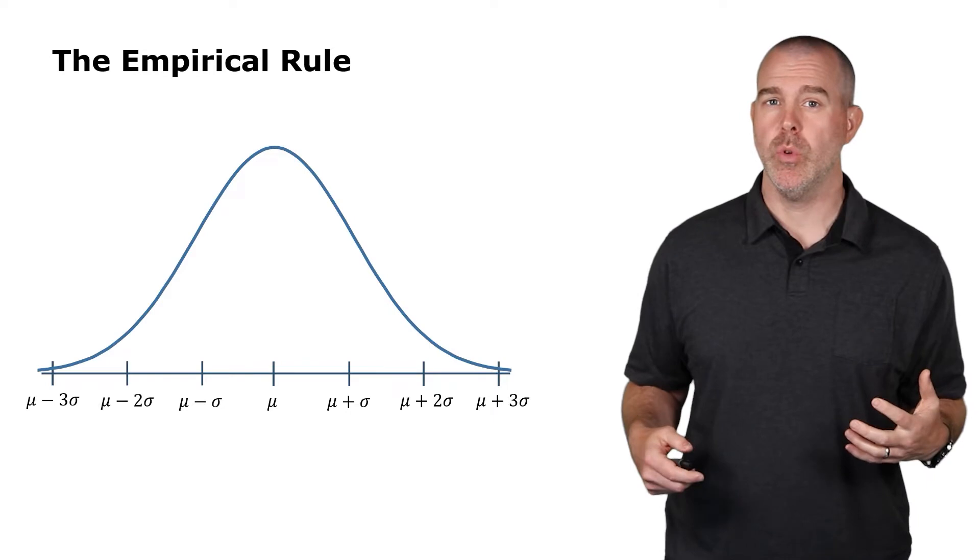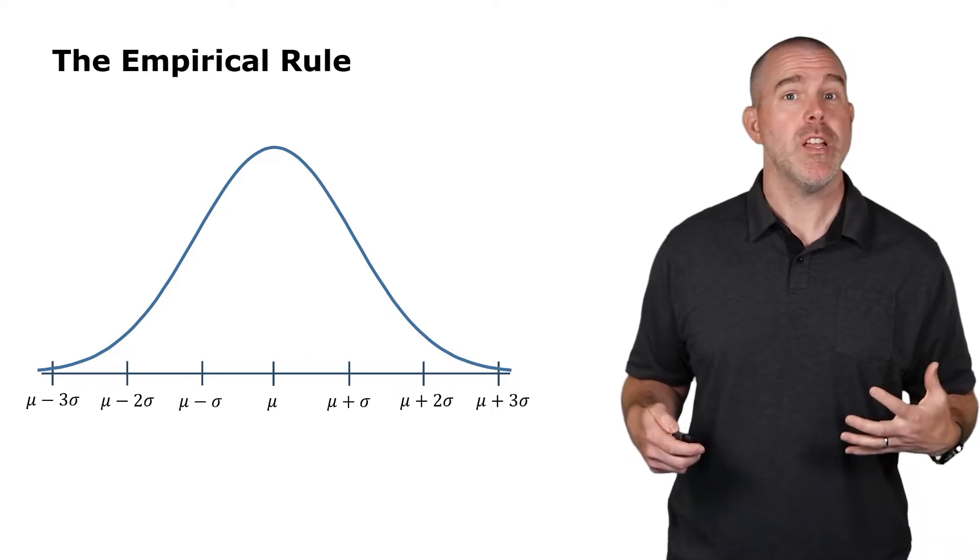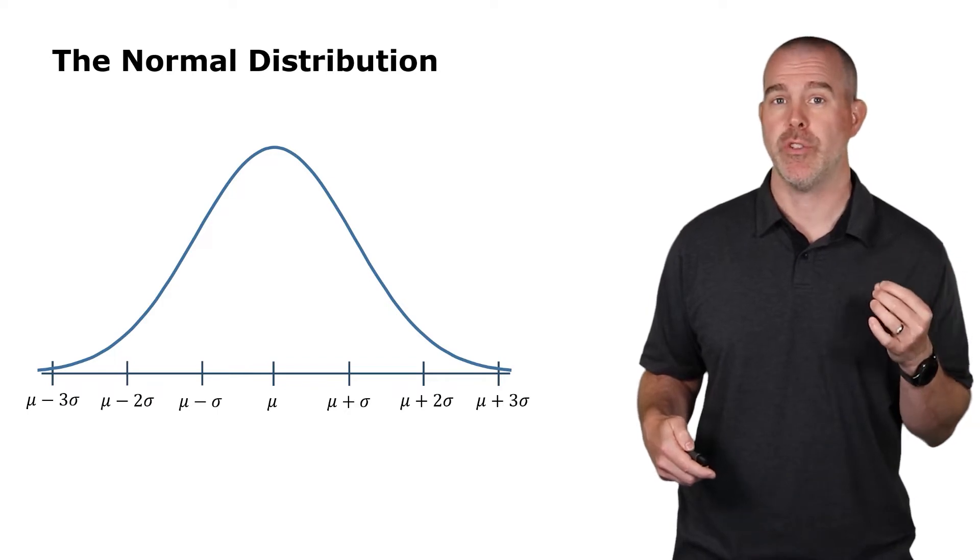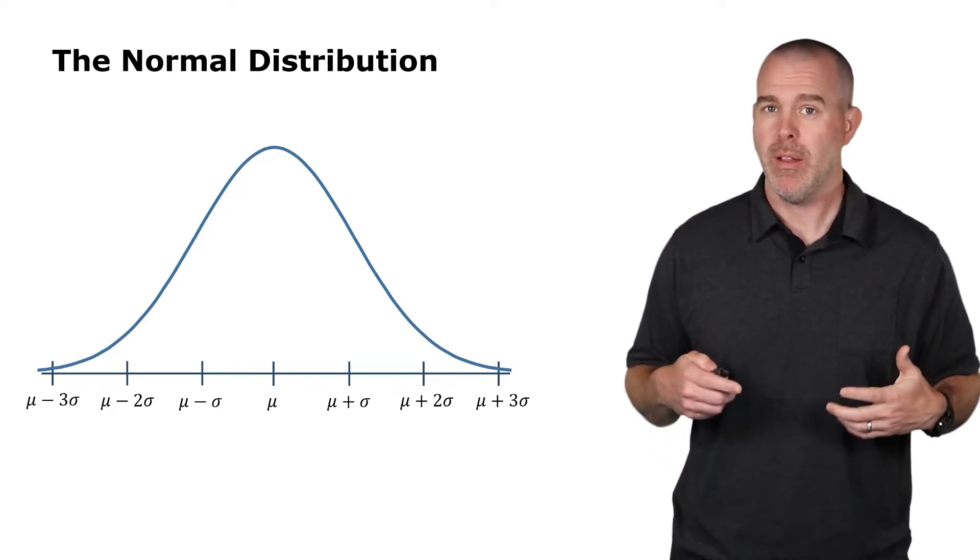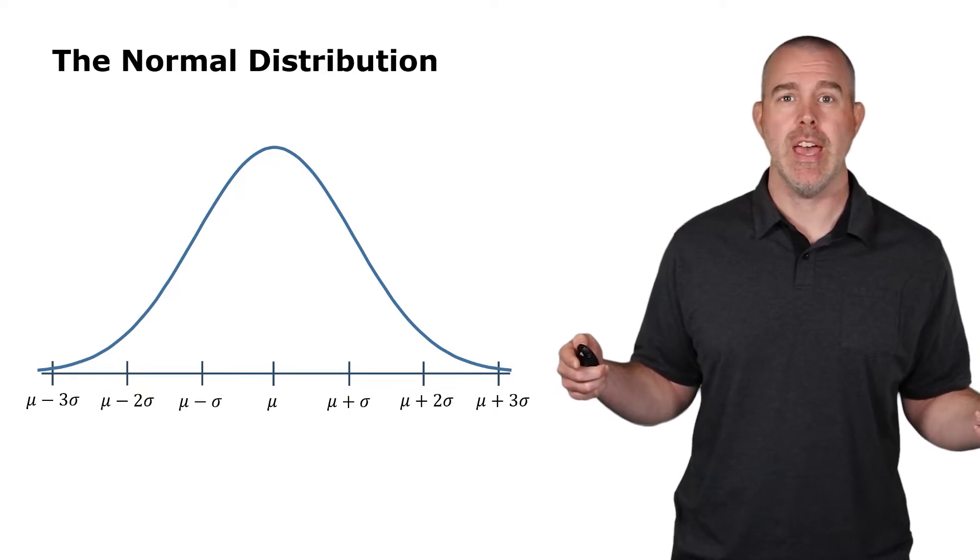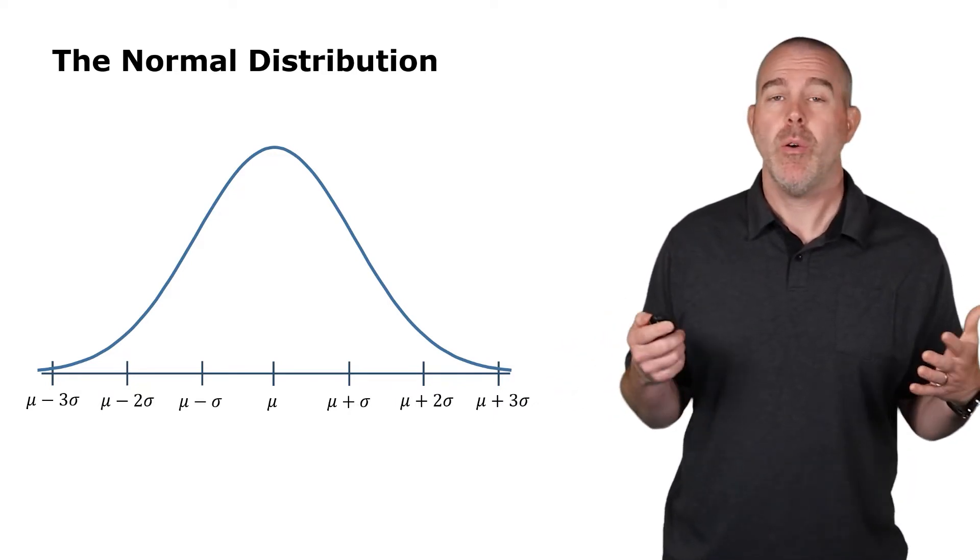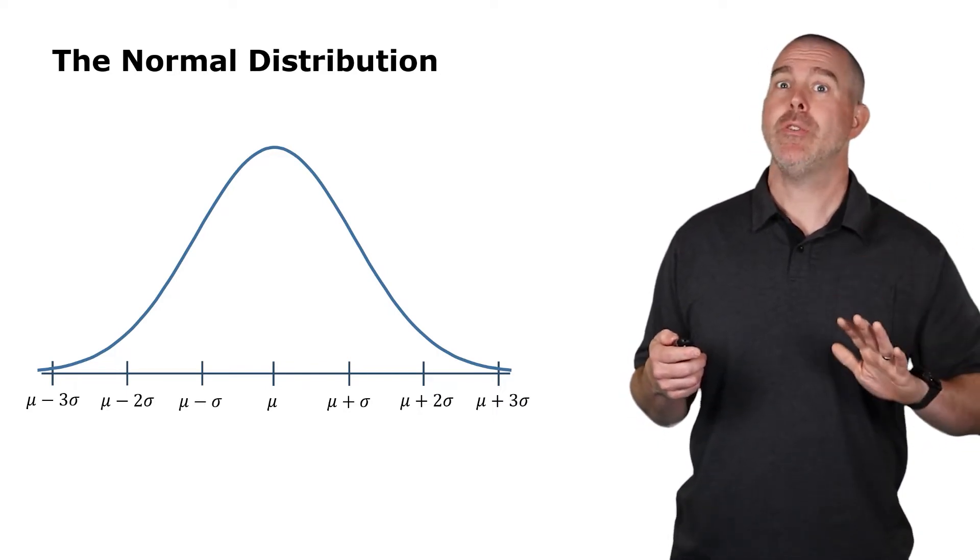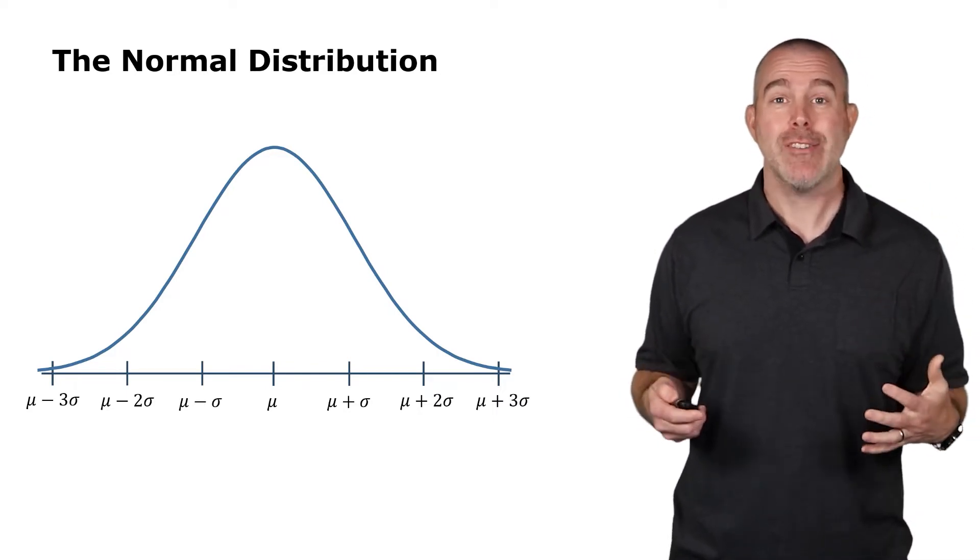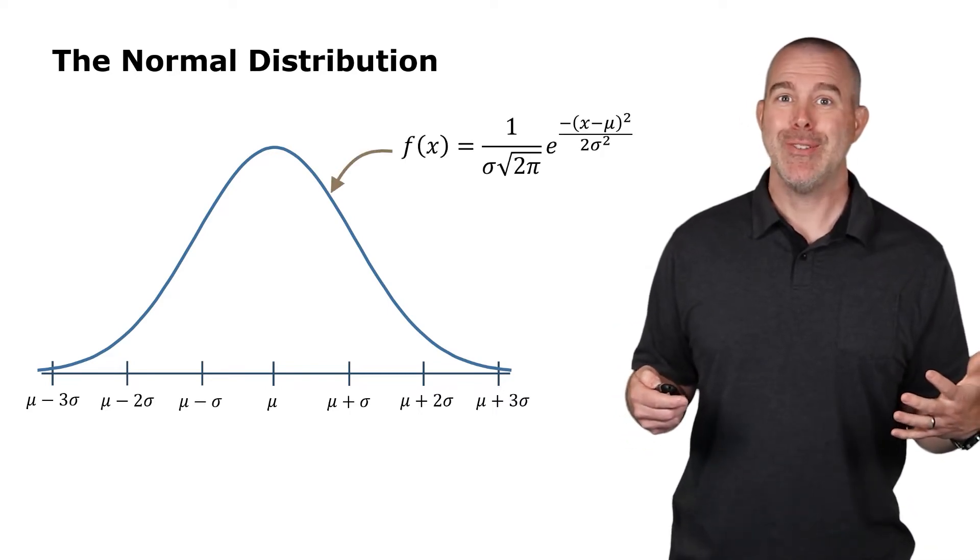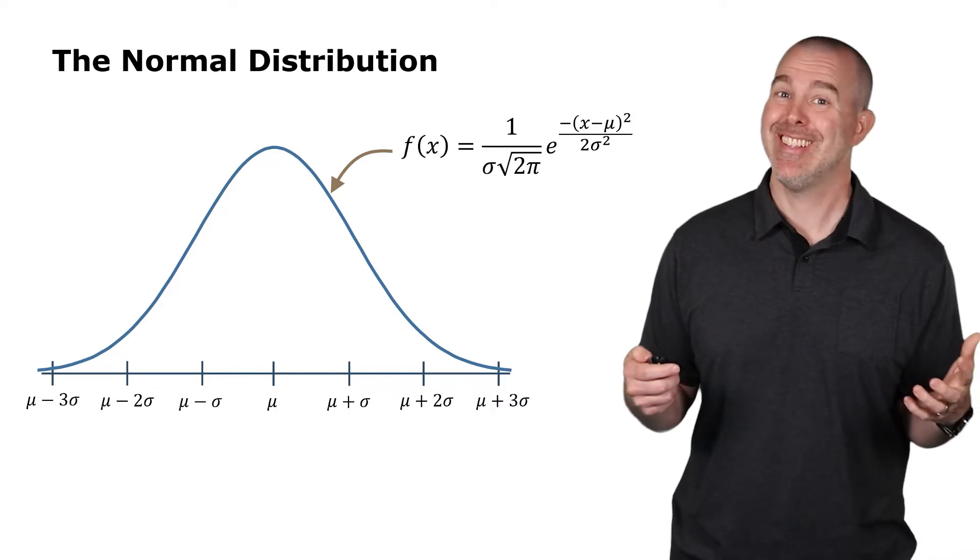Okay, back to that empirical rule. This distribution, this is actually a probability distribution, and it's formally known as the normal distribution, where you have the mean in the middle, and then plus or minus three standard deviations get you all the way to the edge. Well, how do we find probabilities here? How do we know areas underneath it? Well, I have good news and bad news. Good news is there's actually a function for this curve. Bad news is it's a little crazy.